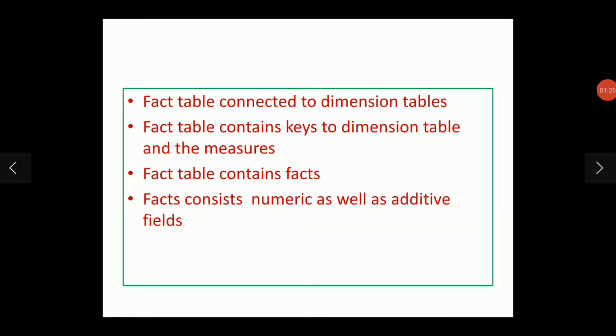Fact table connected to the number of dimension tables. Usually, we have a single fact table in the schema. We have studied the star schema, snowflake schema and fact constellation schema. These are the three types of schema.